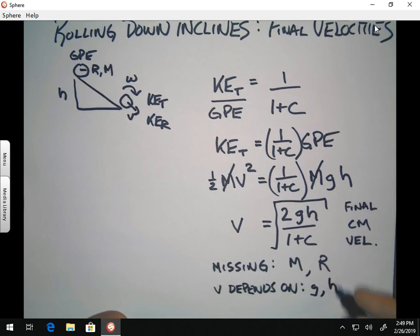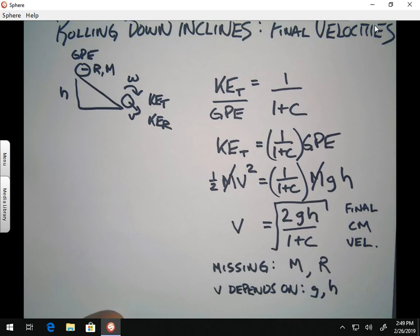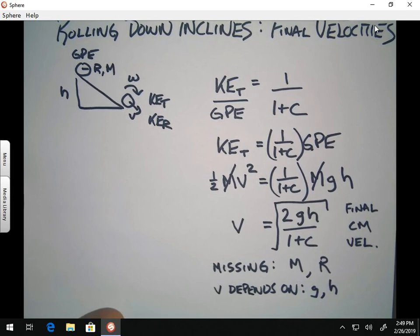One of them is the height of the ramp, of course. Because the higher the ramp, the faster the object is going to be moving. But the last thing is probably the most interesting. That's C, which is the shape factor.